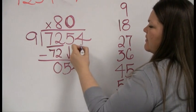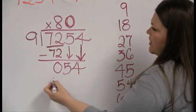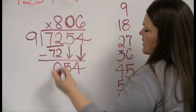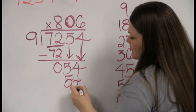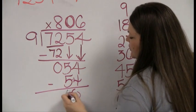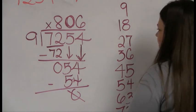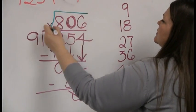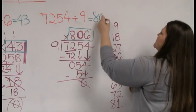Do you guys follow that? So if I put a 0 up here, I then may have the next digit. So now I'm looking, how many times does 9 go into 54? Goes in 6 times. 6 times 9 is 54. I have no remainder. I am done. So 7,254 divided by 9 is 806.